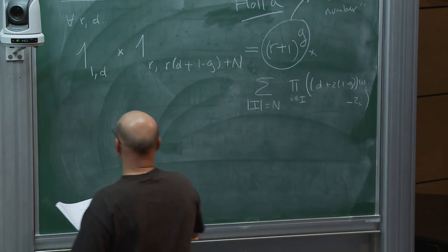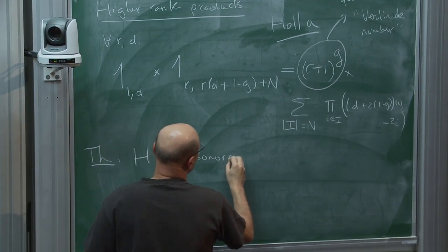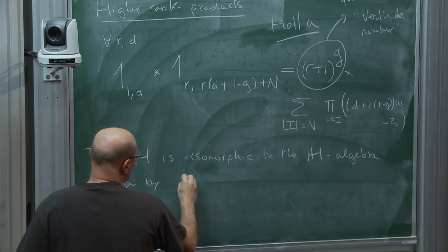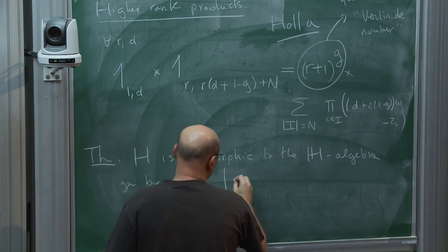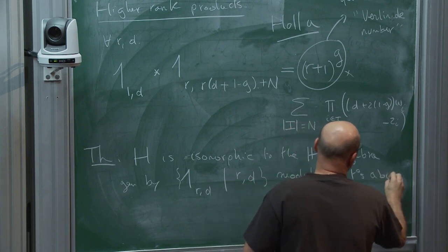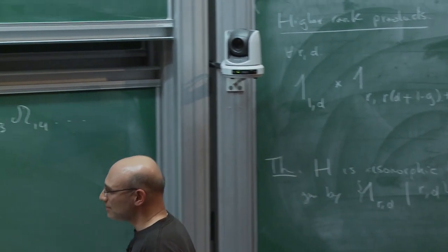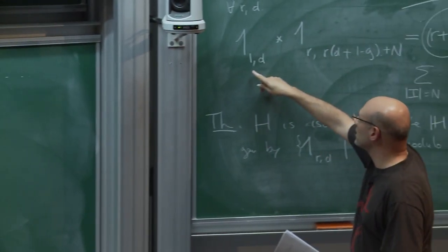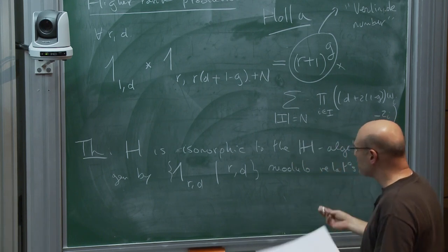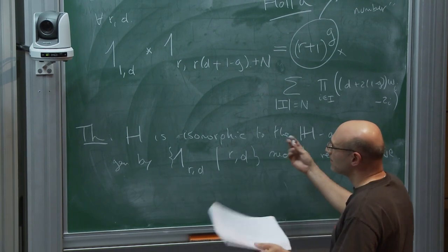Finally, the theorem, and I'll stop here: H_X is isomorphic to the H̲-module algebra generated by all 1_{R,D} for R and D, modulo the relations above — all three types: the structure of the cohomological Hecke algebra, the cohomological Hecke operators, and this higher-rank multiplication. In principle, this is enough to determine all the intersection numbers. I'm not claiming it is easy, but the information is contained in here.